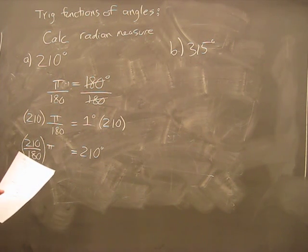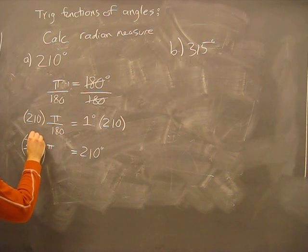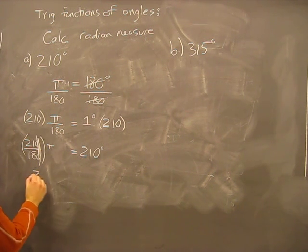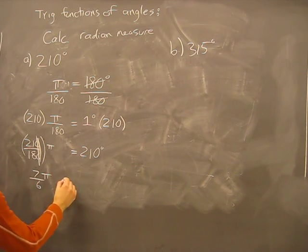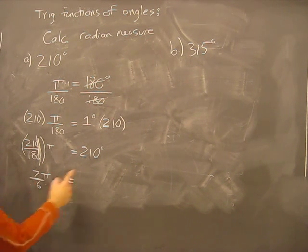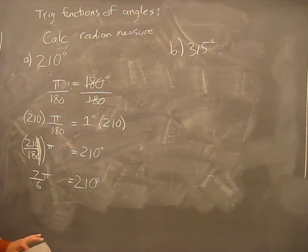Now you can reduce this fraction out. Let's see. 21 over 18 that ends up being 7 over 6. π is still there. So 7 over 6 π equals 210 degrees. Just that easy. This is the precise answer.